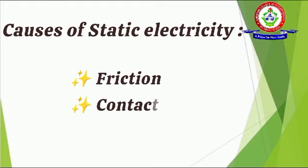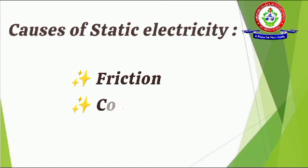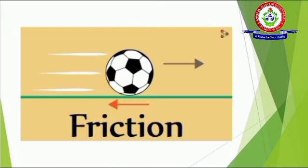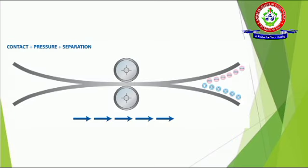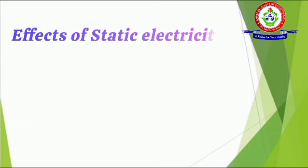The causes of static electricity are: first, friction — rubbing materials together transfers electrons; second, contact — objects touching and separating can transfer electrons; and third, separation — breaking apart materials can create static charge.